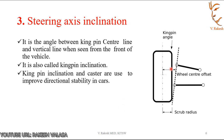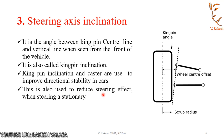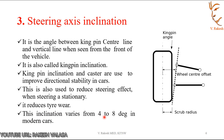The steering axis inclination also helps in reducing excessive camber as it brings the wheels' steering axis center line closer together where they intersect the road surface. This in turn reduces the force required to steer the vehicle. Kingpin inclination and caster are used to improve directional stability in cars. This is also used to reduce steering effort when steering is stationary, and it reduces tire wear. This inclination varies from 4 to 8 degrees in modern cars. The camber angle plus steering axis inclination is known as the combined angle or included angle.